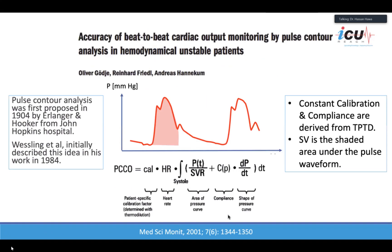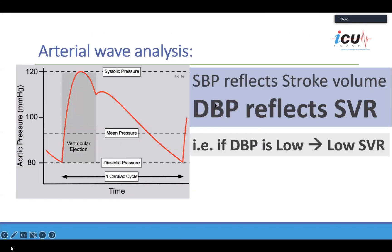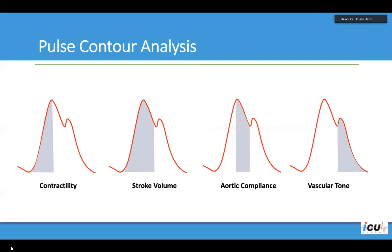Moving on to continuous cardiac pulse contour analysis: the principle has been around since 1904, with clinical utilization starting in 1984. These devices combine pulse contour analysis with thermodilution to calibrate results — this is the advantage over non-calibrated devices like Vigileo, FlowTrack, or LidcoRapid. From the arterial waveform, the initial upstroke represents contractility, the area up to the aortic dicrotic notch represents stroke volume, the initial downslope represents aortic compliance, and after the dicrotic notch the runoff waveform represents vascular tone.